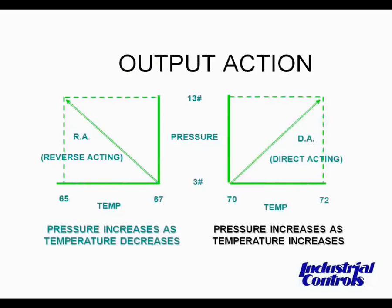Next, what we're going to talk about is output action. In any type of automatic control, we need to determine the control or action required. When using two-position control, the actions are pretty cut and dry. We would select a reverse-acting control if we want the system to increase its output energized state on a decrease in temperature and humidity. We would select a direct-acting control if we want the system to increase its output energized on an increase in temperature and humidity.